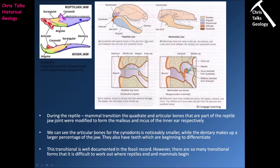Another thing that we look for are differences in jaw design. We can see a general reptilian jaw and also an avian bird jaw for comparison — they are very similar in design with the same bones in approximately the same locations. However, if we look at the mammal jaw, you'll see the situation is completely different. Nearly the entire jaw is just one bone — the dentary. Compare that to the reptile jaw and the bird jaw, where the dentary only makes up approximately 50% of the jaw, whereas in a mammal jaw it's about 80 to 90% dentary.